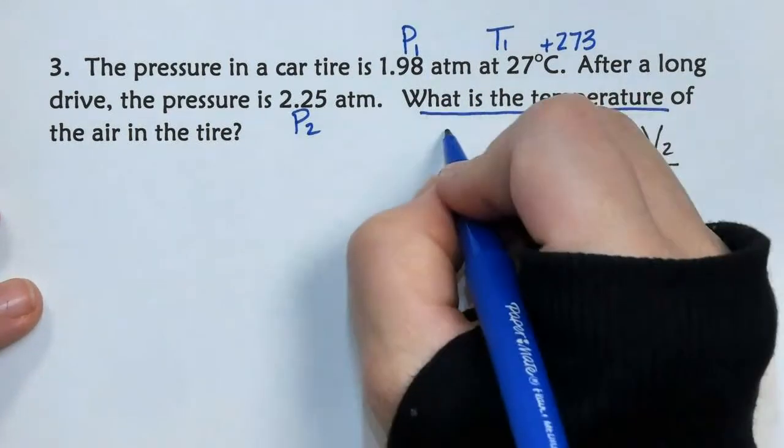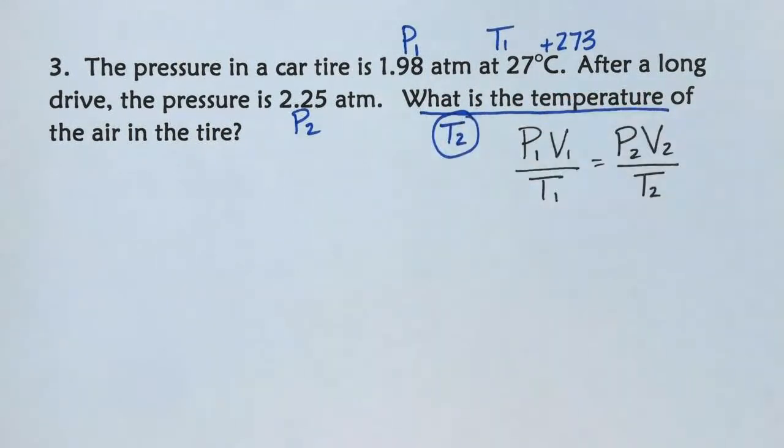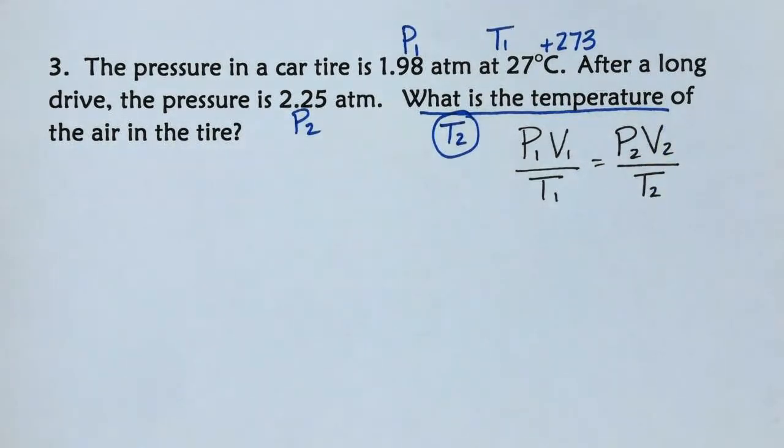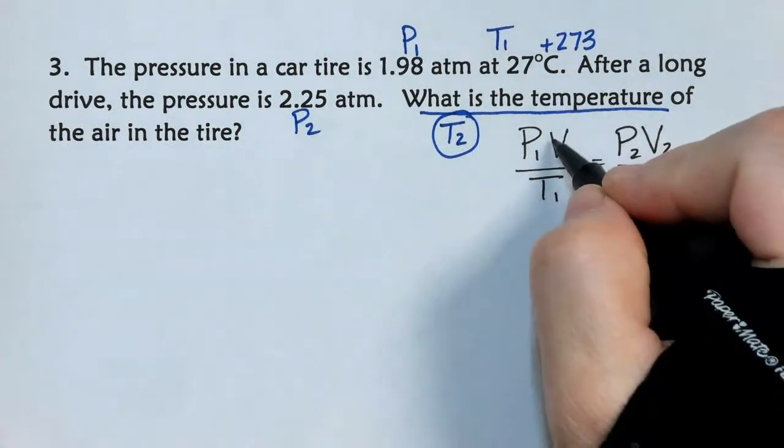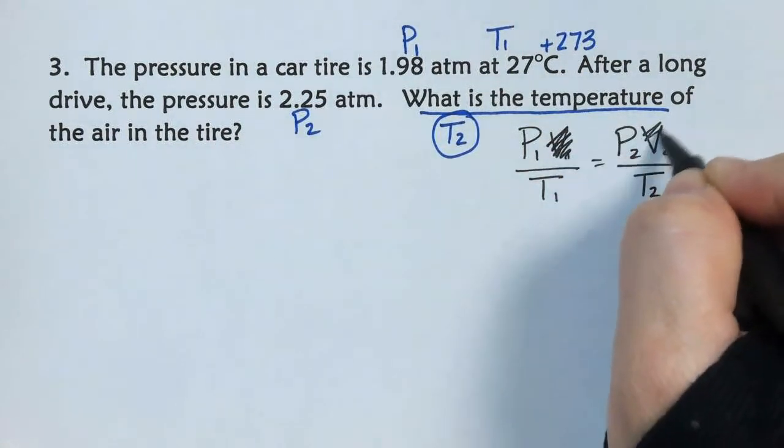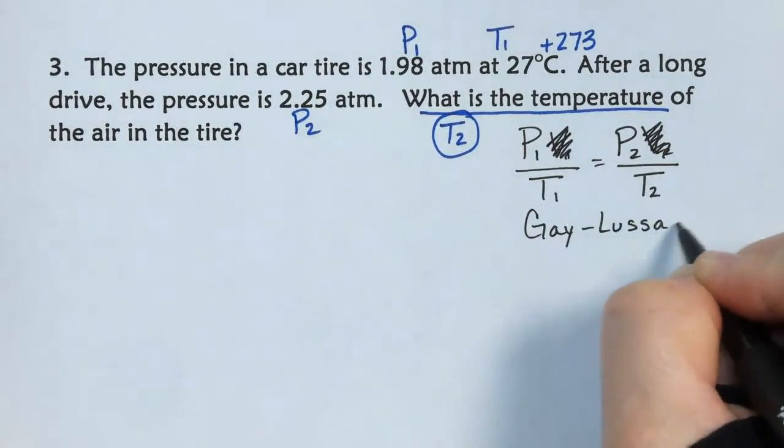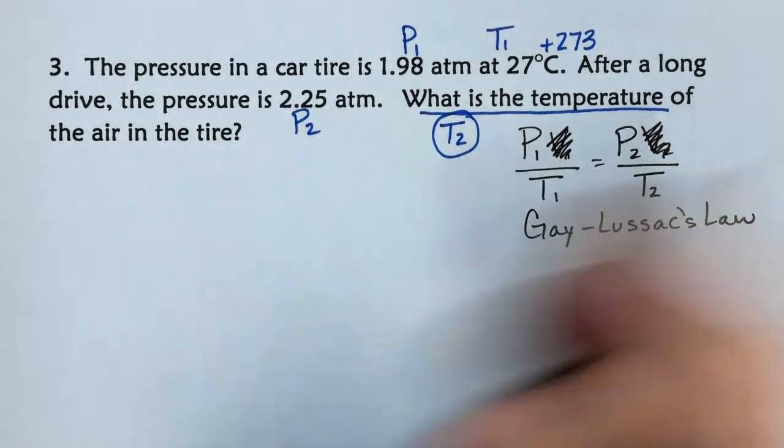So, because it says what is the temperature, I'm trying to find T2. And then, of the air in the tire. You'll notice that we were not given any volumes, and so that means volume is not a factor. In this calculation, which is how we know this is a Gay-Lussac's Law calculation. So, now I'm going to plug in my variables.